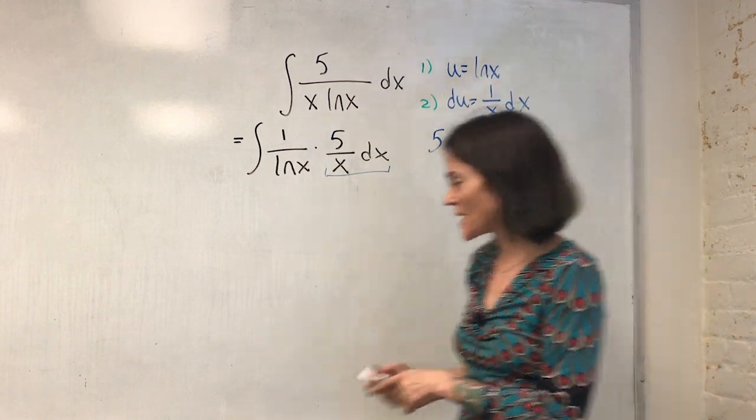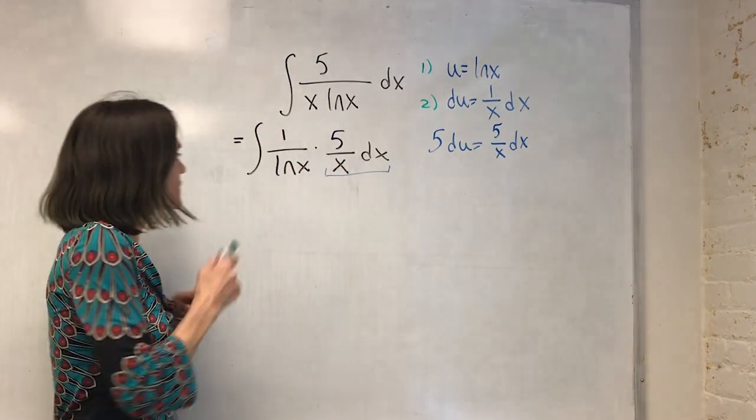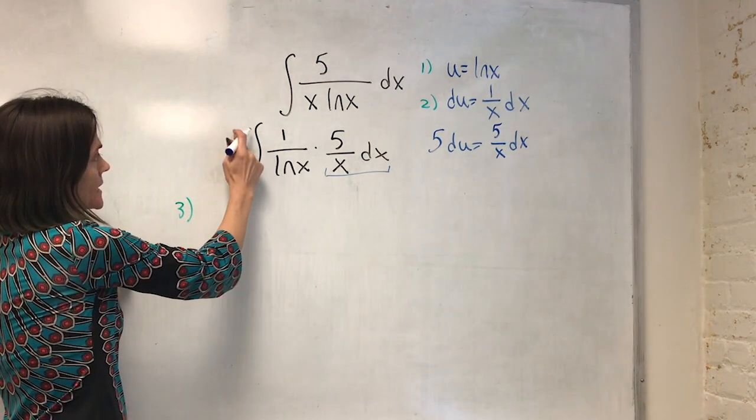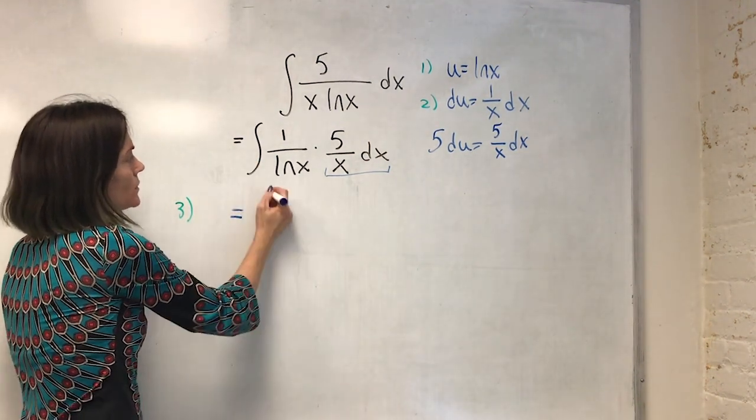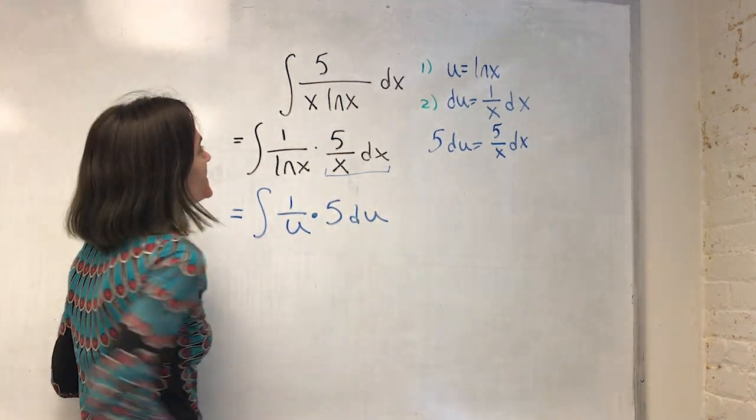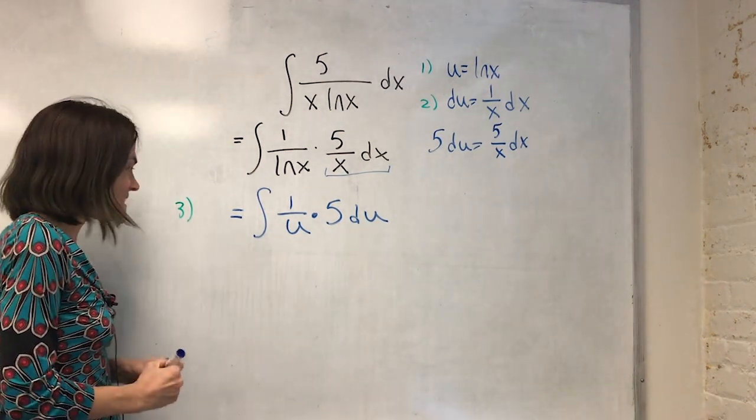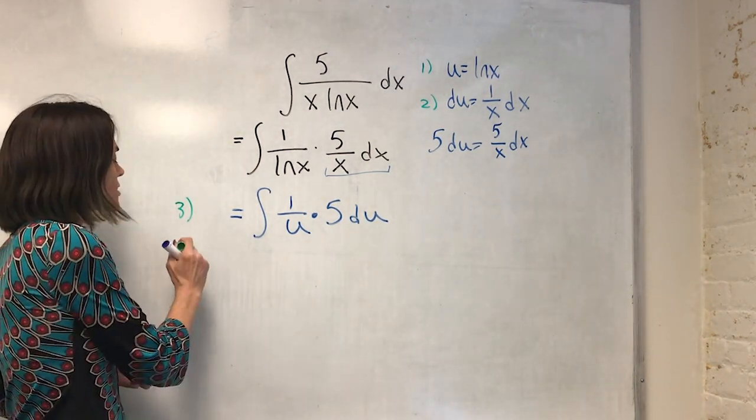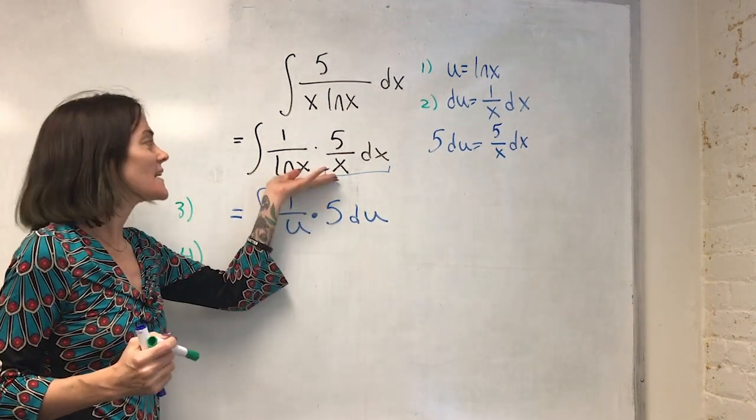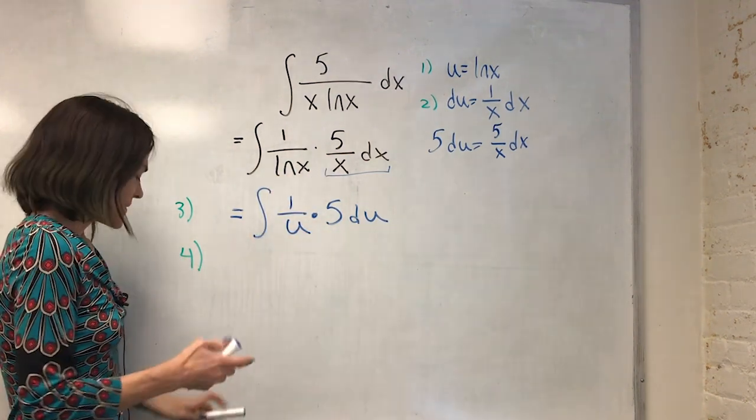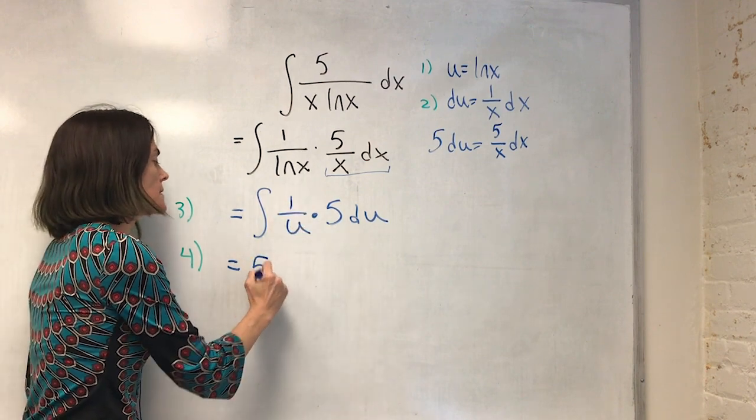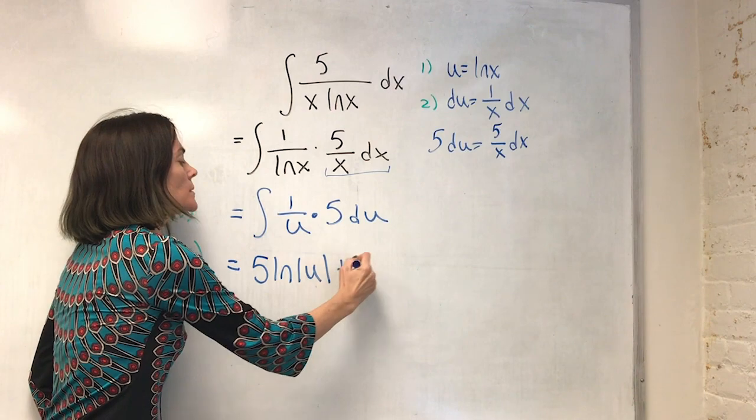And this will be my step three, convert to an integral of u. So step three, convert to an integral of u. I have everything I need. So this is equal to the integral I have 1 over u times 5 du. Next, we integrate with respect to u. And again, notice there are no x's here. And similarly, there are no u's here. So we integrate. When we integrate 1 over, we get ln, absolute value of u, plus c.